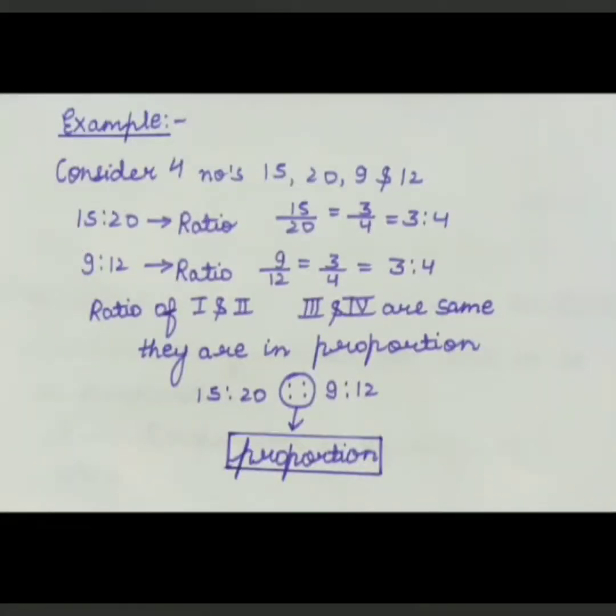Let's take an example. Consider the four numbers 15, 20, 9, and 12. First we'll take out the ratio between the first and second one. 15:20 equals 15/20 equals 3/4. Then 9 and 12, ratio will be 3:4, 3×3 is 9, 3×4 is 12.